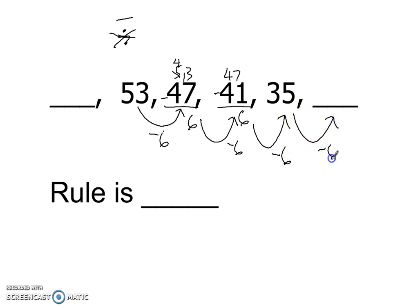So every step is minus 6. So over here at the end, we're going to have 35 minus 6. Do a little borrowing. We get 29. And over here, something minus 6 equals 53. Which really means I need to add 6 onto 53. Because it needs to be bigger than it.